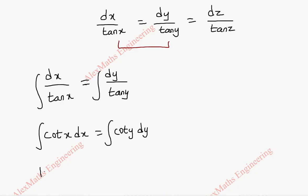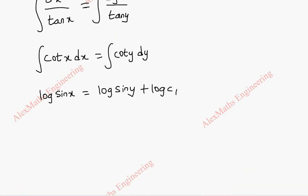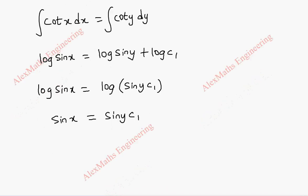The formula of integration for cot x is log of sin x. Here it is log of sin y. Since both the terms are log, let's take log c1 as a constant instead of c1. Now, using log rule, we combine these two terms. Log a plus log b is log ab. So it is log of sin y into c1. Removing log, we get sin x is equal to sin y into c1. Finally, c1 is sin x by sin y.